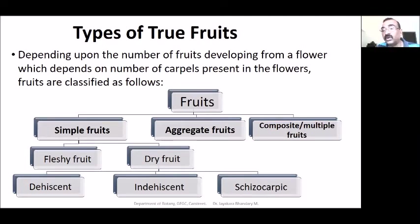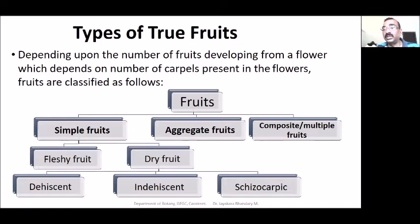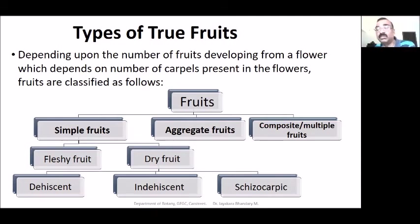Composite fruit is formed from an entire inflorescence. For example, pineapple — each unit of the pineapple is actually a flower. So it is actually formed by many flowers of the inflorescence together. That is called a composite fruit or multiple fruit.